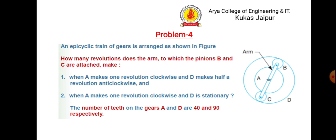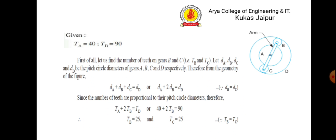Problem 2: In the epicyclic train shown in the figure, find how many revolutions the arm — to which pinions b and c are attached — makes: (1) when a makes one revolution clockwise and d makes half a revolution anti-clockwise, and (2) when a makes one revolution clockwise and d is stationary. Number of teeth on gears a and d are 40 and 90 respectively. From the geometry: d_a + d_b + d_c = d_d, replacing d with t gives the number of teeth on gear b as 25. Since d_b = d_c, we have t_b = t_c.